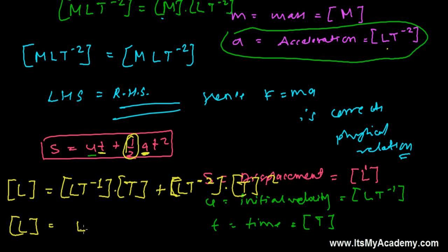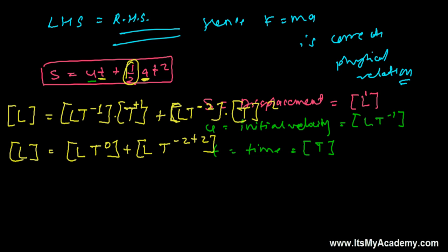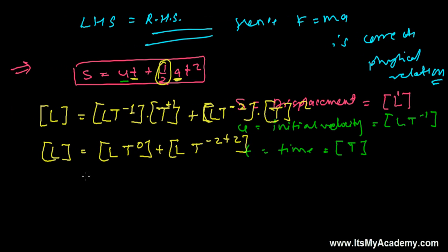See here, if you see T^-1 and T^+1, so -1 plus 1 you'll get T^0. In the second term we'll be getting L^1, and here we have T^-2 and T^+2, so again you will get 0. The principle of homogeneity says if a physical equation is correct, then each term should have the same dimensions.